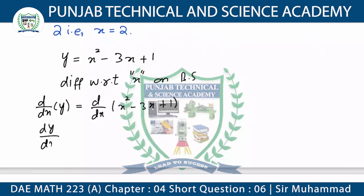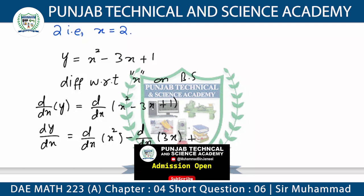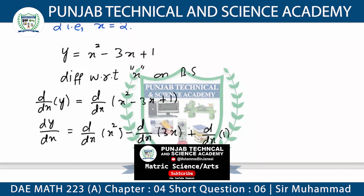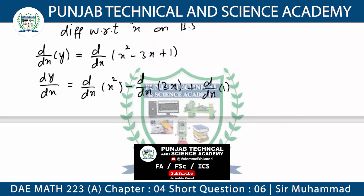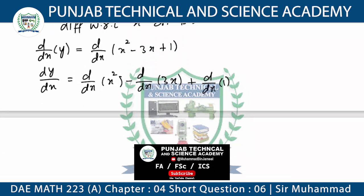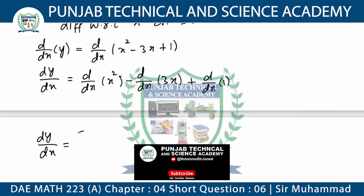dy/dx is equal to d/dx of x squared, minus d/dx of 3x, plus d/dx of the constant 1, which gives 0. Now apply the power rule: dy/dx equals, using the power rule.